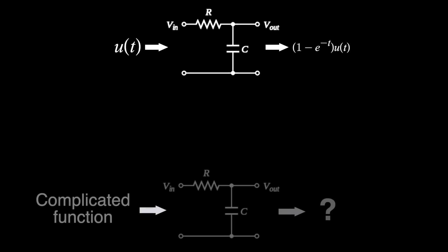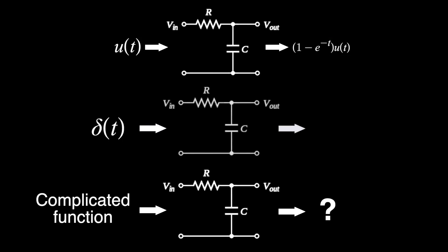But this equation is something you'd pretty much see in a basic circuits class. What if the voltage is much more complicated? Well, if inputting u of t gives us this, then inputting the derivative, or the Dirac delta function, would give us this.